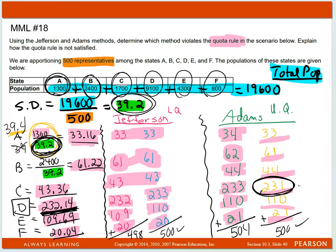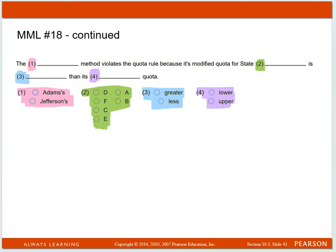So when I go to this page, this is under the Adams rule. Drop-down box number one, I'm going to click on Adams. It violates the quota rule because its modified quota for State D was greater or less than the upper or lower quota.